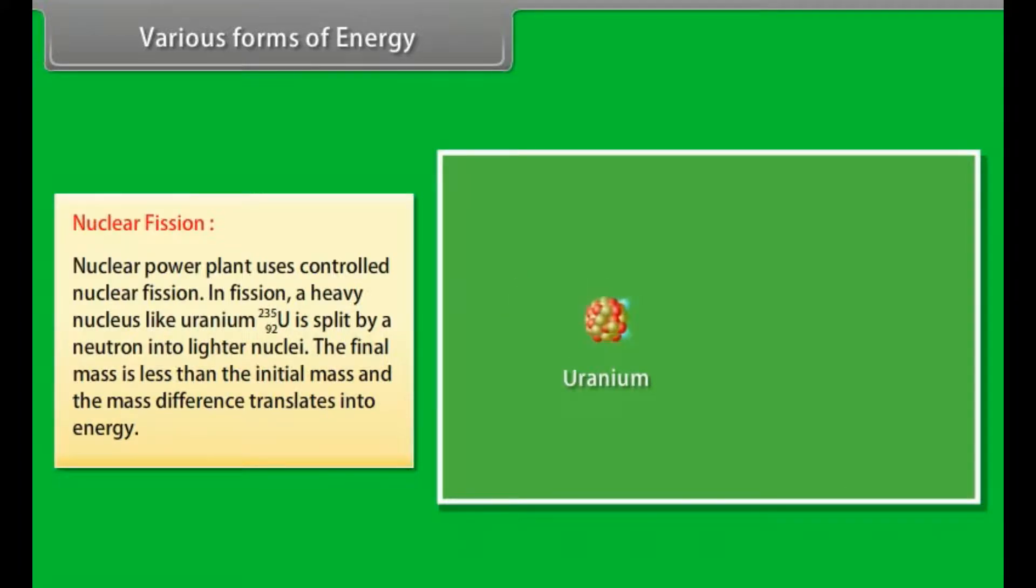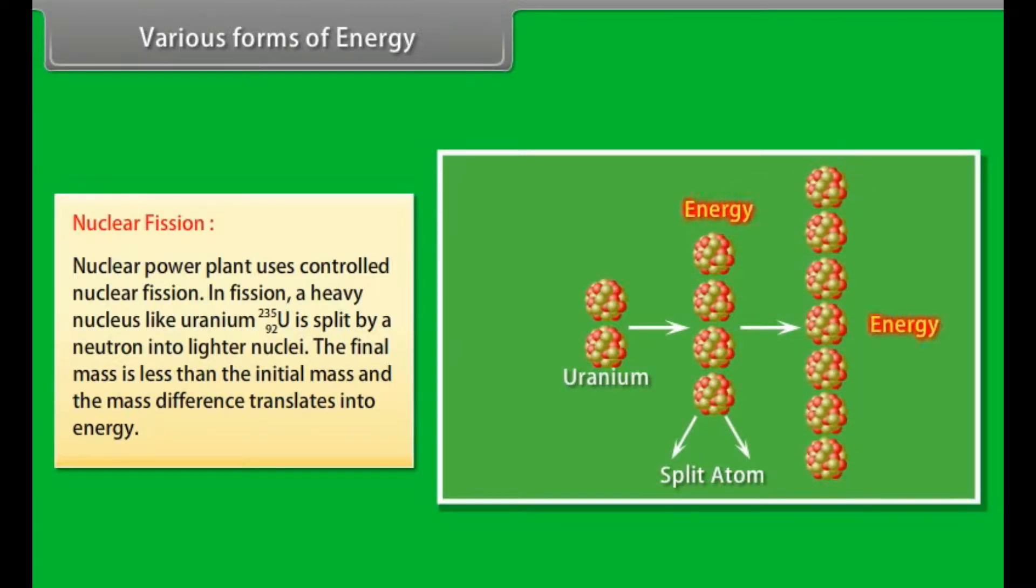Nuclear fission. Nuclear power plant uses controlled nuclear fission. In fission, a heavy nucleus like uranium-235 is split by a neutron into lighter nuclei. The final mass is less than the initial mass and the mass difference translates into energy.